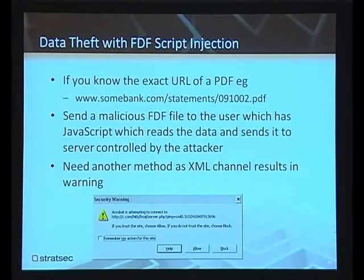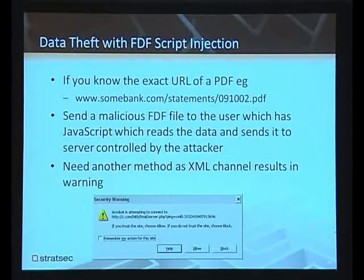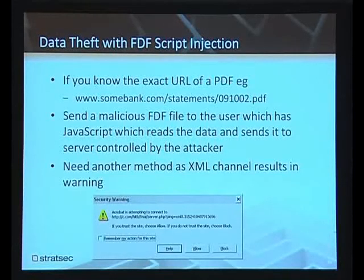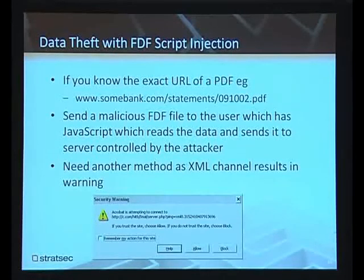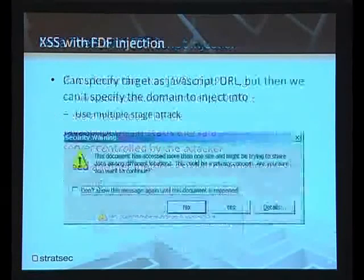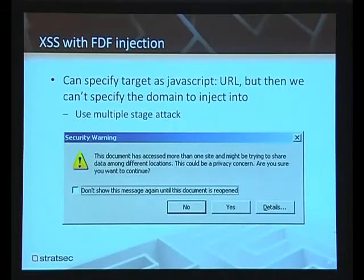One thing you could possibly do, if you know the exact URL of a PDF, you could steal the contents of that PDF. Basically, you send them an FDF file which has the target PDF, some script that gathers the content, and then sends that content off to somewhere else. Though when I tried to do this, even the XML channel resulted in a warning to the user — it's a fairly cryptic warning, it just says it's trying to connect to a site. If it was a site you trusted, you might say yes anyway. So it's not great either way. But if there was another channel — for example, if you were able to do it through DNS exfiltration — you could probably get the data out that way.